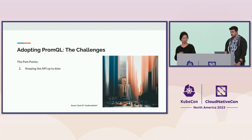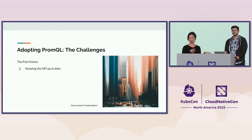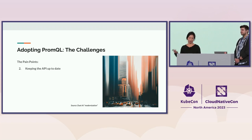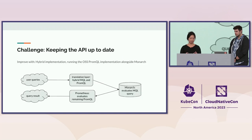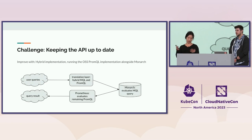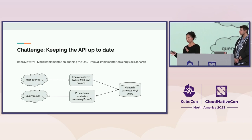Another challenge is keeping our implementation in sync with the open source PromQL API. If we were to translate every query from PromQL to MQL, there would always be some lag — if PromQL gets updated with new functions added, we'd have to spend time implementing the translations and they wouldn't be available right away. Our solution is to run a hybrid implementation: the open source PromQL query engine runs alongside Monarch. When our translation layer gets a query, it decides which part should be executed by Monarch and which part by PromQL.